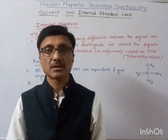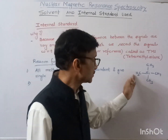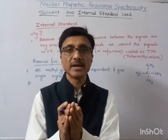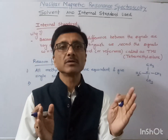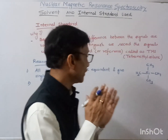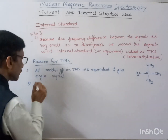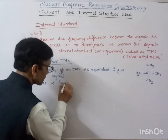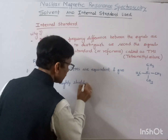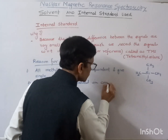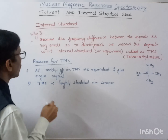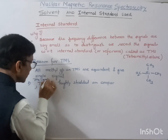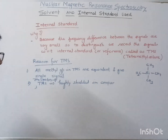These protons are highly shielded. With a few exceptions, if you compare TMS with any other organic molecule, these methyl groups are highly shielded and they come at the right corner in the NMR spectrum. All other protons resonate to the left of this. So TMS is highly shielded in comparison to other compounds.